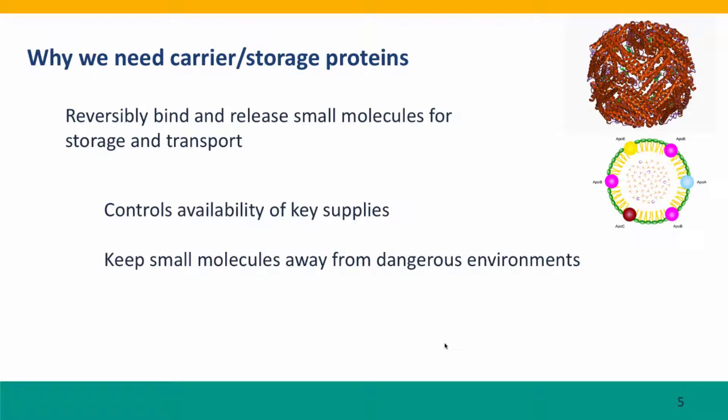Now, what about the other kinds of proteins — carrier proteins and storage proteins? Most of these molecules function by reversibly binding and releasing small molecules for storage and transport, especially for transport in the bloodstream. These molecules control the availability of key supplies to different parts of the body and keep small molecules out of trouble — you'll see examples of both of these issues in the two examples I'm about to discuss.